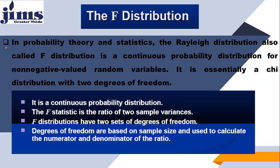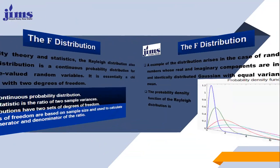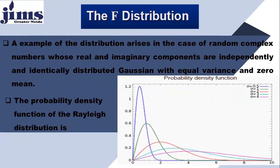Third point: this F distribution or Rayleigh distribution has two sets of degrees of freedom. The meaning of this point is this particular distribution involves two different Gaussian random variables. Fourth, the degrees of freedom are based on sample size and used to calculate the numerator and denominator of the ratio. An example of this distribution arises in the case of random complex numbers whose real and imaginary components are independently and identically distributed Gaussian with equal variance and zero mean.